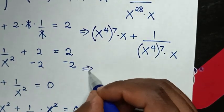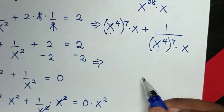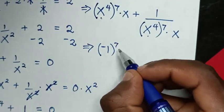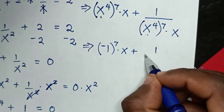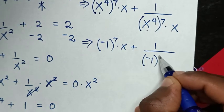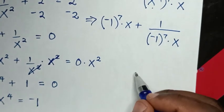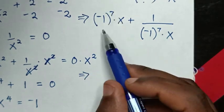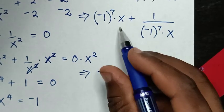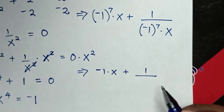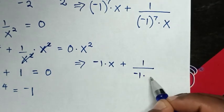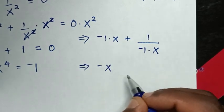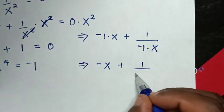Then in the next step, we substitute the value of x power 4, which is negative 1. So it will be (negative 1) to the power 7 times x. Negative 1 raised to an odd number, which is 7, is negative 1. So it will be negative 1 times x. Then plus 1 over (negative 1 to the power 7) times x, which is 1 over negative 1 times x. So that gives negative x plus 1 over negative x.